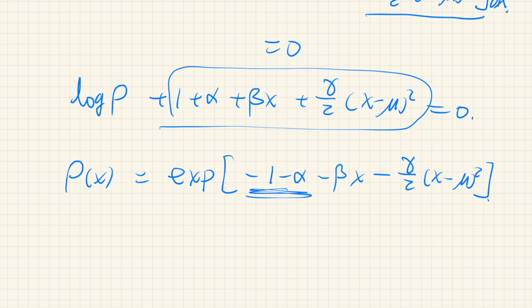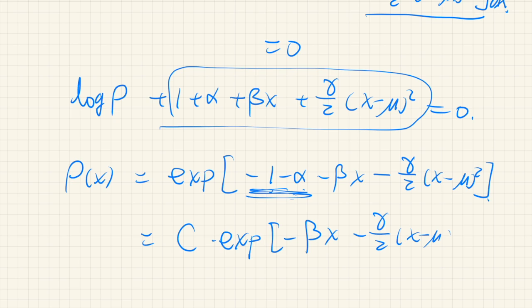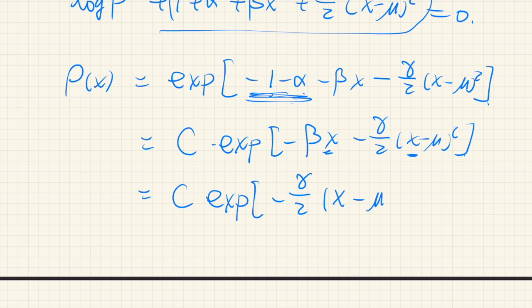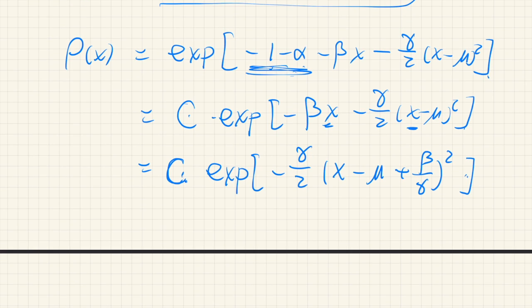The constant term (1 + α) can be absorbed into a constant C, giving ρ(x) = C · exp[−βx − (γ/2)(x−μ)²]. Since there are both x and x² terms, we complete the square inside the exponent, obtaining ρ(x) = C · exp[−(γ/2)(x − μ + β/γ)²], where any remaining constant is absorbed into a redefined C.